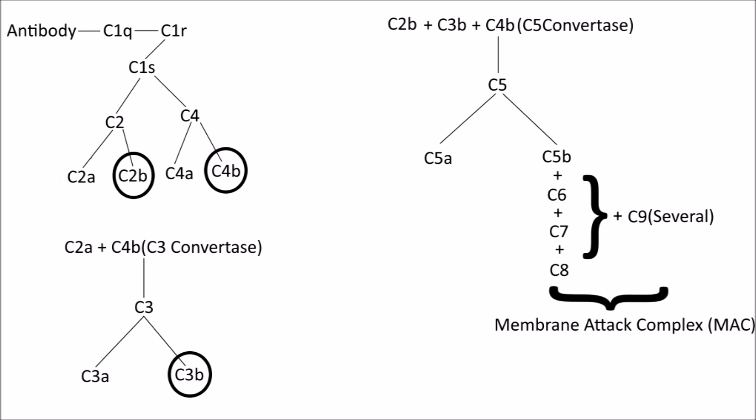Now this process also allows for opsonization, or the flagging of pathogens for phagocytosis, as well as inflammation, with C3A causing inflammation, C3B causing opsonization, and C5A causing inflammation.